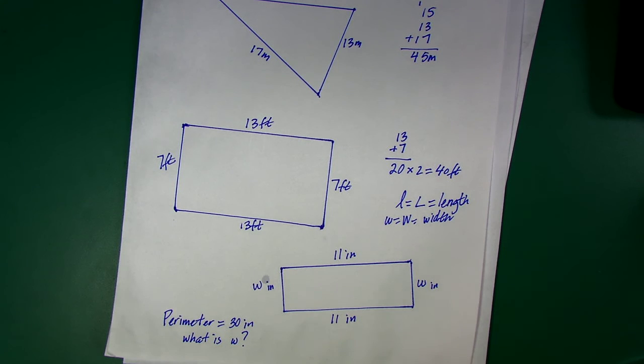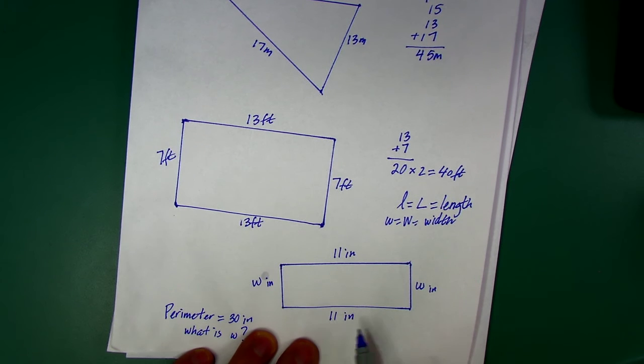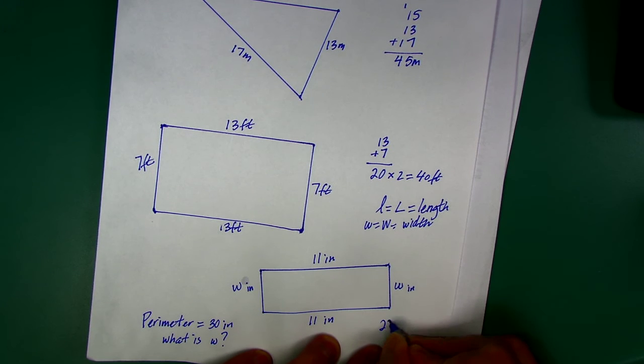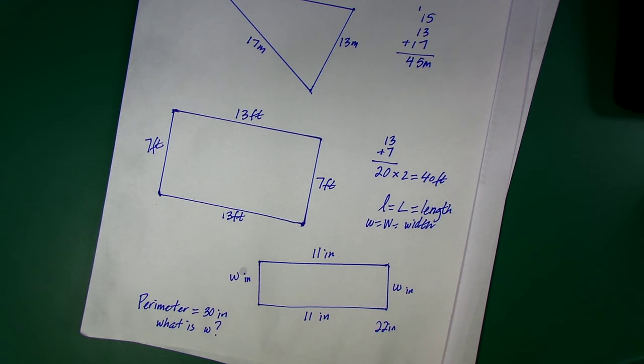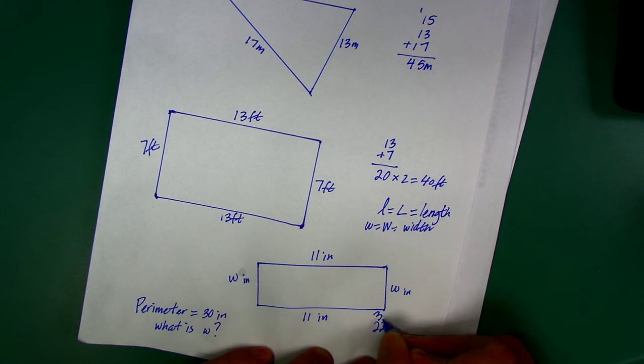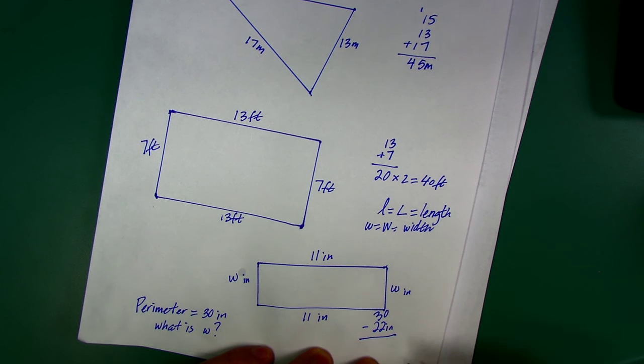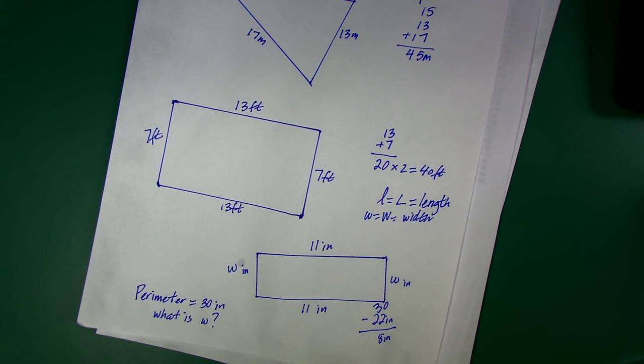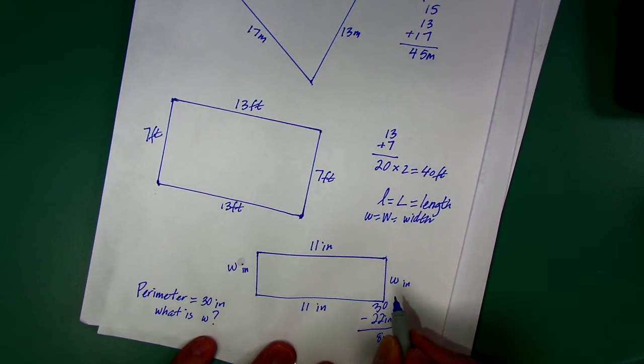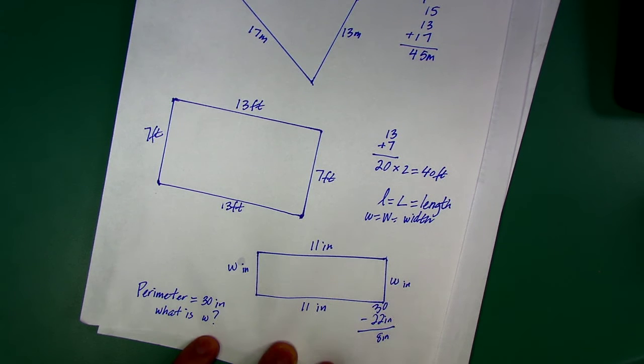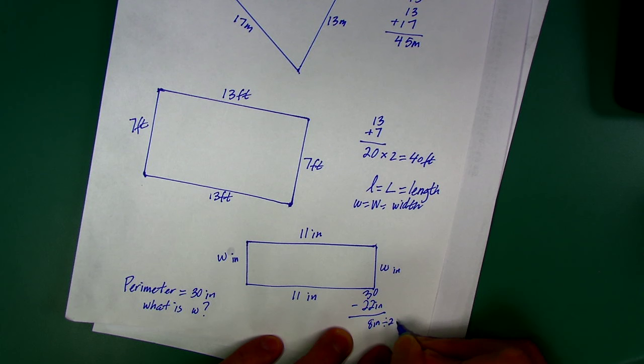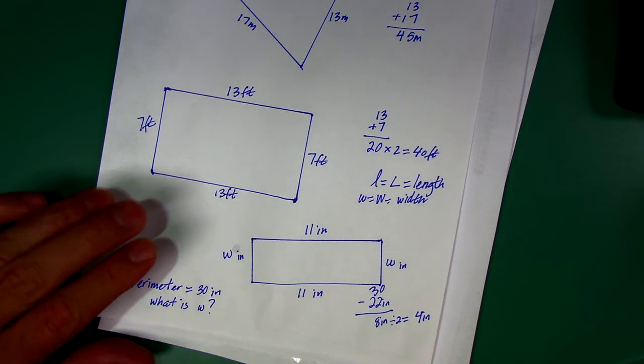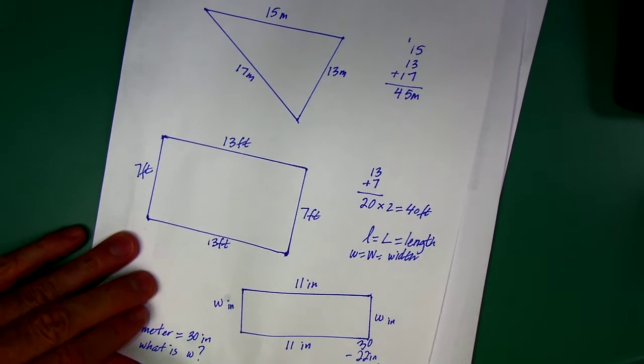W is the width. 11 plus W plus 11 plus W equals 30. 11 and 11, that's 22. The most popular wrong answer: 30 minus 22 is 8. Is W equal to 8? If you thought it was, you're wrong, but you're not alone. 8 would be both of these together. So each of these is going to be half of that 8, which is 4. If you solve that, you just did some algebra.